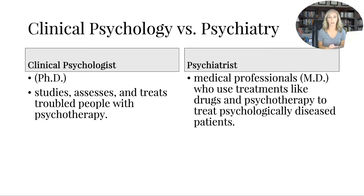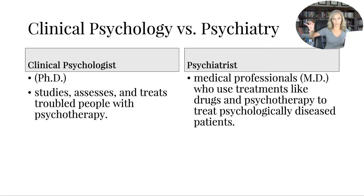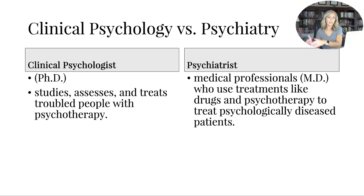Clinical psychology versus psychiatry is a really important distinction. If you're going to be a clinical psychologist, you have a doctorate — a PhD — which means you study, assess, and treat troubled people with psychotherapy, essentially talk therapy. Whereas a psychiatrist is a medical doctor who uses treatments like drugs, medications, and psychotherapy to treat psychologically diseased patients. Only a psychiatrist can prescribe medication, not a psychologist.